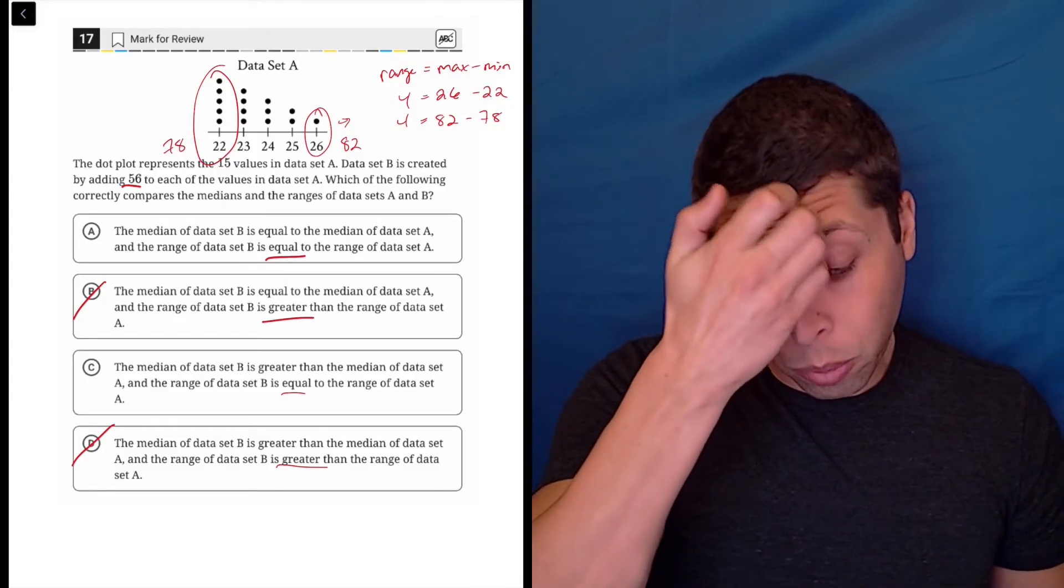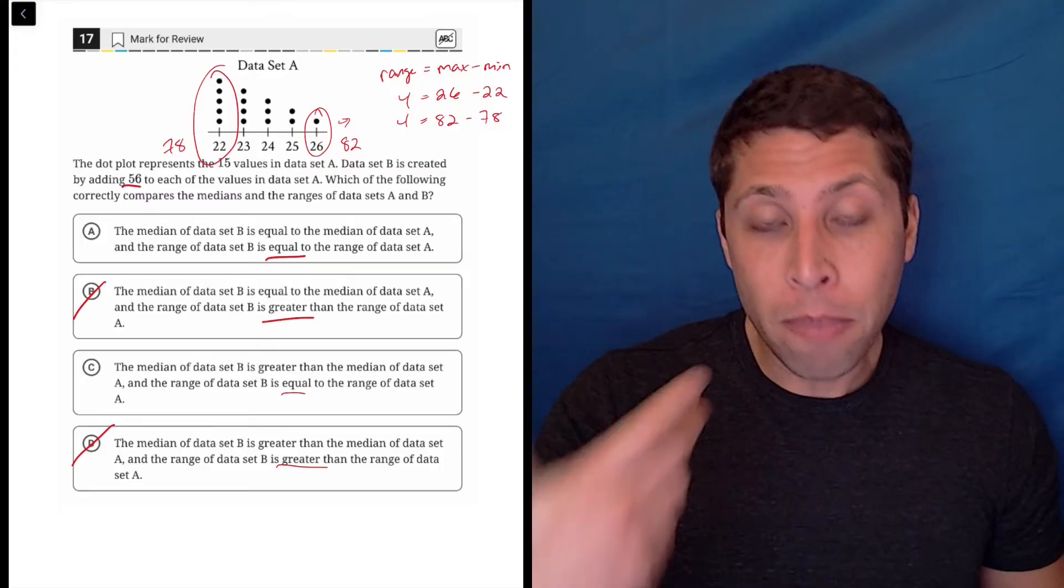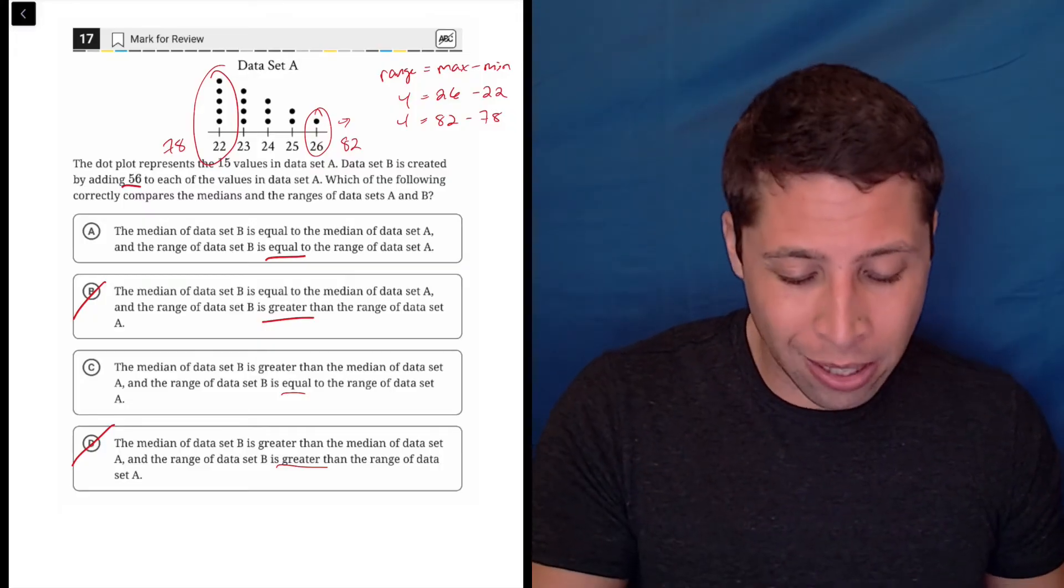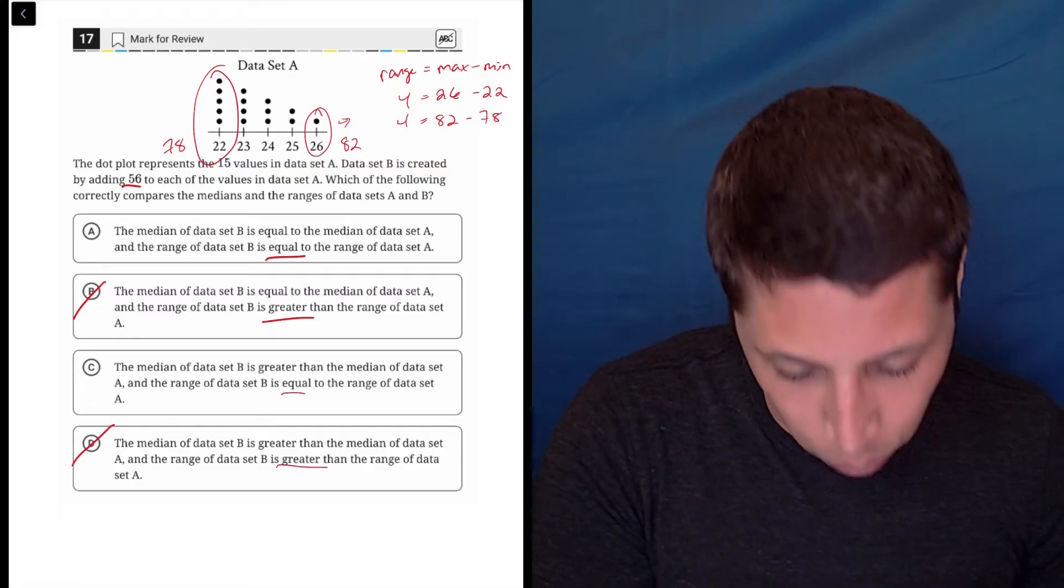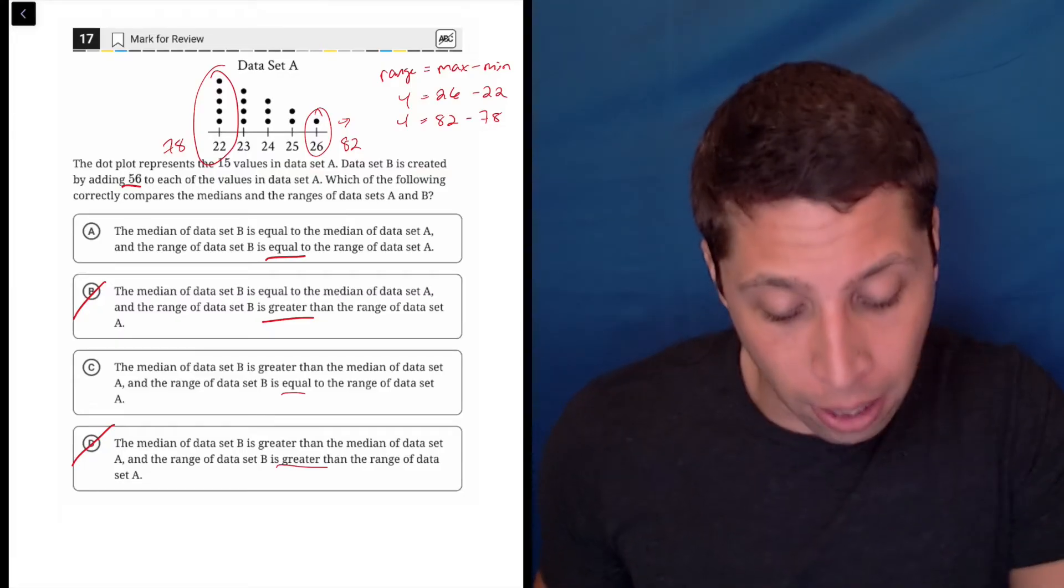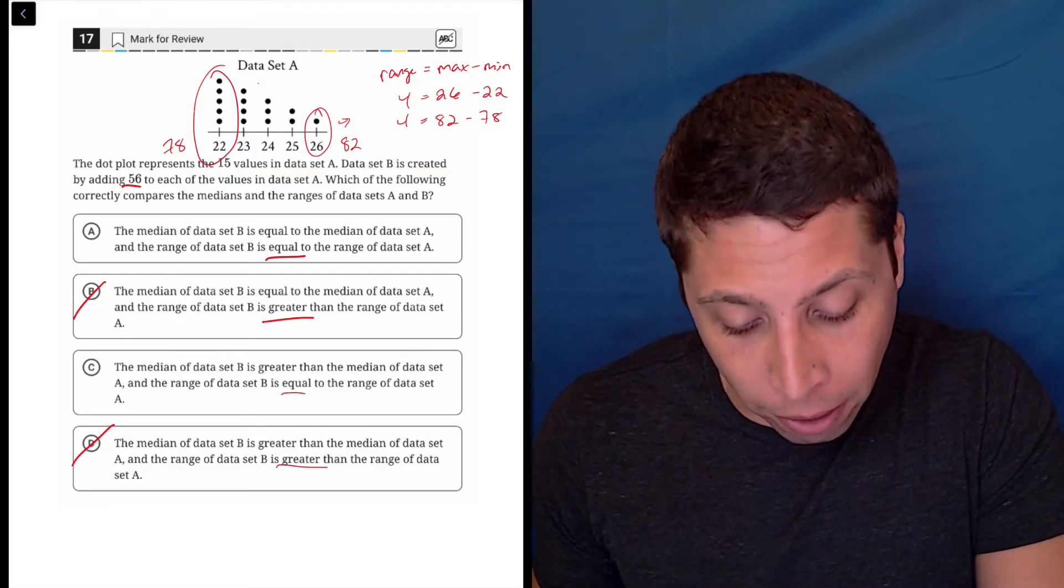Now the only question is what happens to the median? Well, the median is the middle number. And so 24 kind of looks like it. I don't think it actually is. I think it's 23 just because of the way the dots are kind of spread out. But think about it, right?